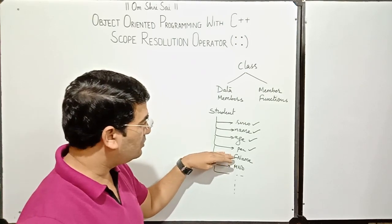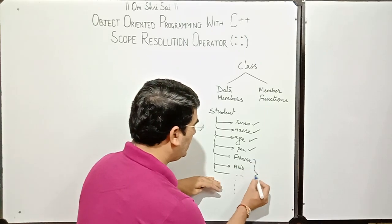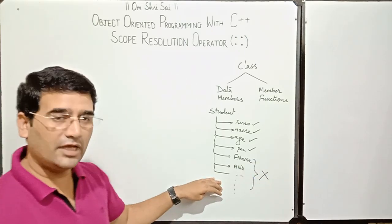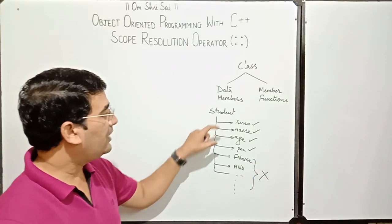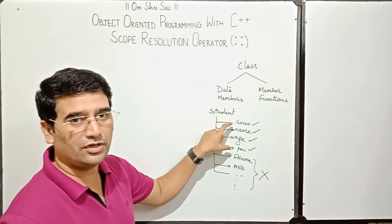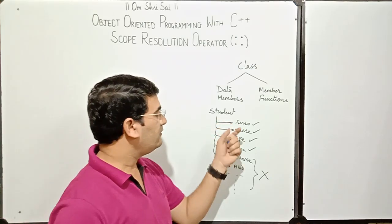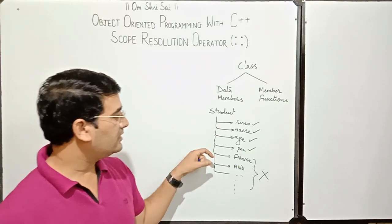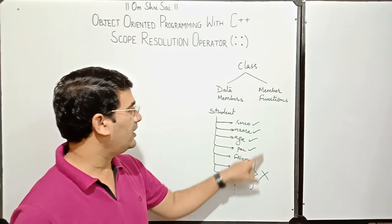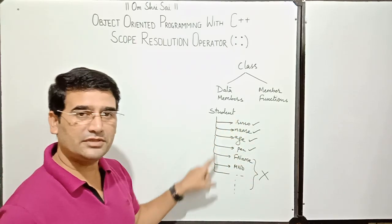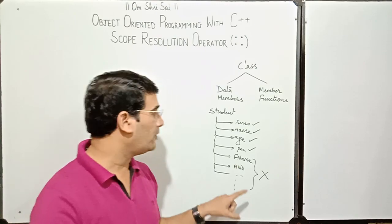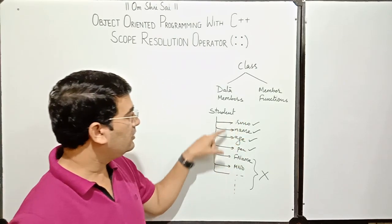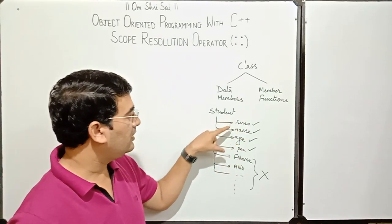So we must reject all these less important properties. I will include just the important properties only. The first part of abstraction specifies that out of all the properties or characteristics, include only those which are important. So out of all, I will include role number, name, age, and percentage only.